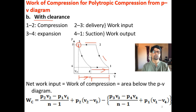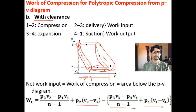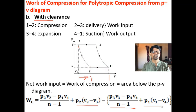So WC: like in the previous case, it is P2V2 minus P1V1 divided by (N minus 1), that is for process 1 to 2 area below this. Then the area of the rectangle for process 2 to 3, that is P2 into (V2 minus V3). Then minus the area for process 3 to 4, which is P3V3 minus P4V4 divided by (N minus 1).